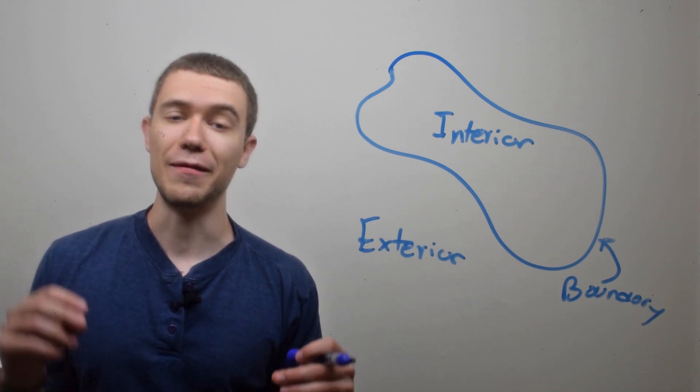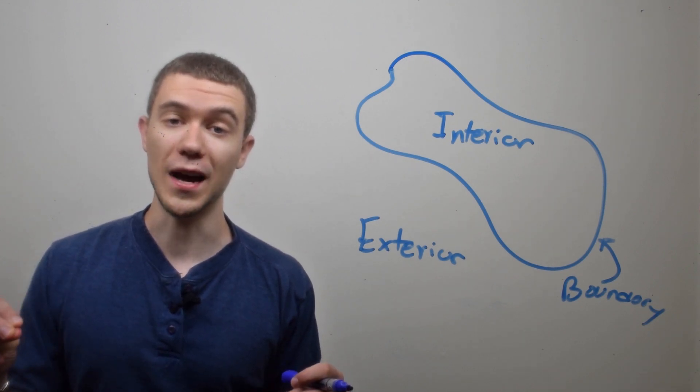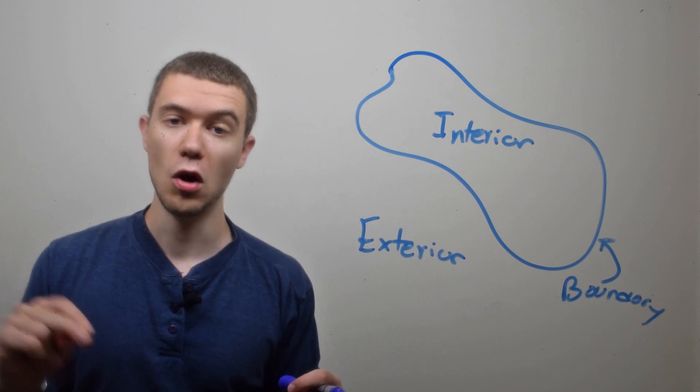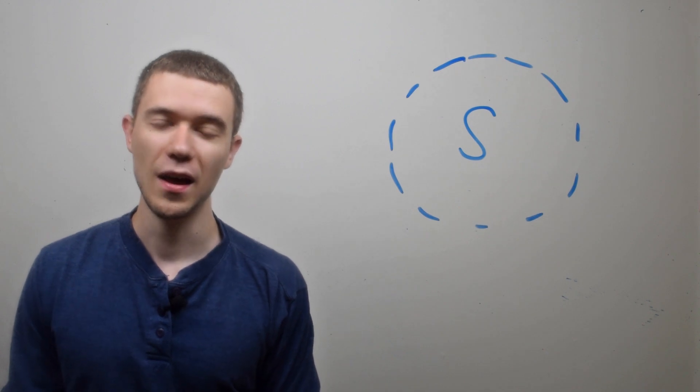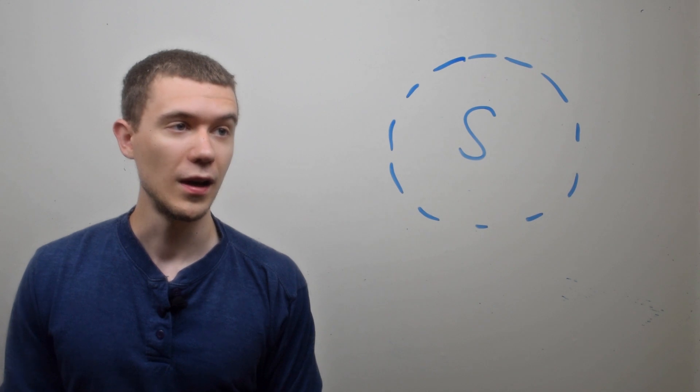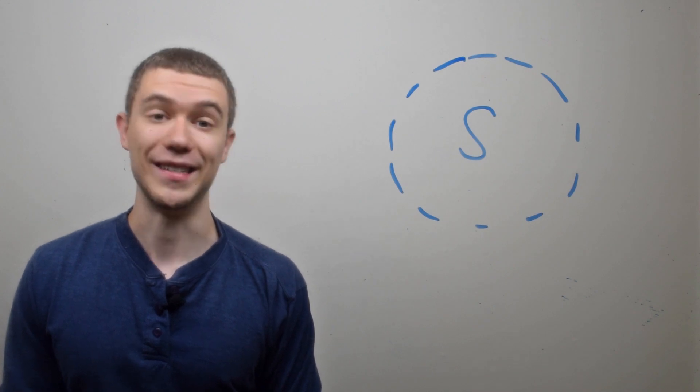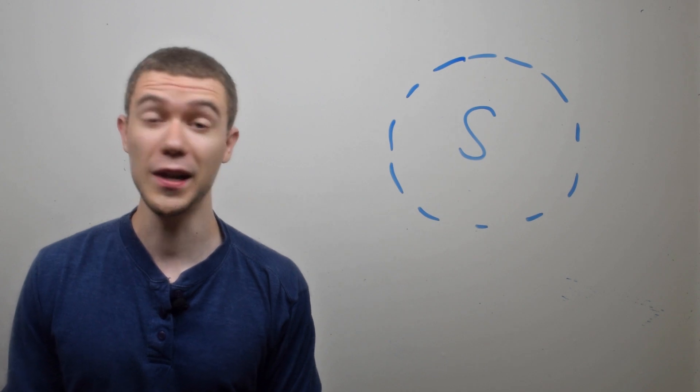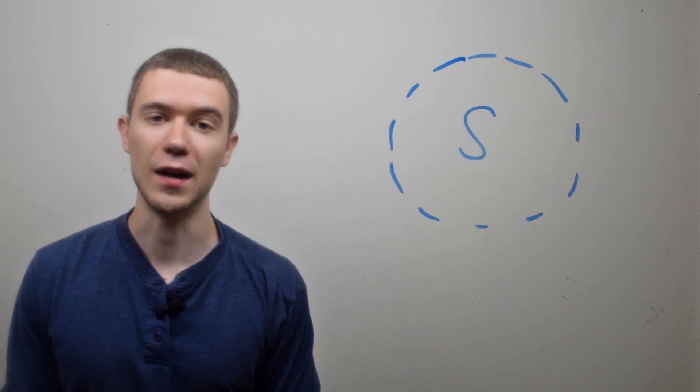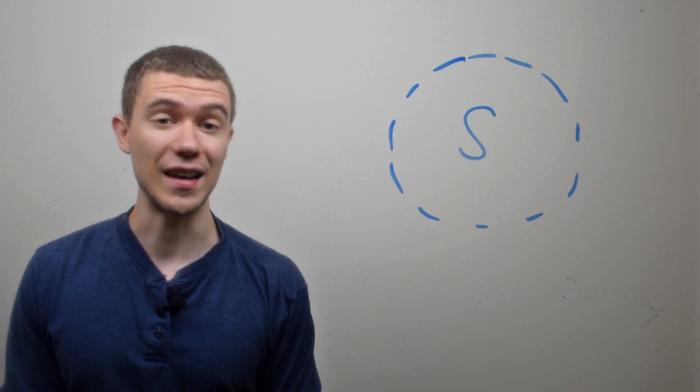And if every point in our set is an interior point, we call that set open. Here I've drawn some set, call it S. Do you think this set is open or closed? Well, if you look around the boundary, it's dashed, meaning this set does not contain all of its boundary points or any of its boundary points. So it's not closed. Is this set open?